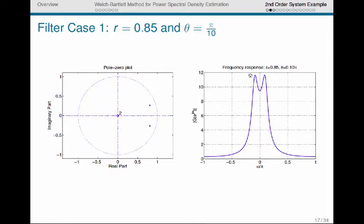We see that there are peaks around plus and minus pi over 10. The height of those peaks is about 12, and then it falls off pretty rapidly outside of that. So that's for the case one that we'll consider.